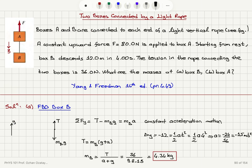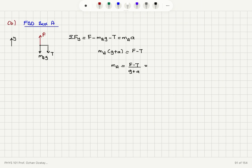And F was 80 newtons. That's the force applied to box A. So, this is 80 newtons minus 36 newtons, the tension in the rope, divided by 9.8 minus 1.5, and that gives us 5.30 kilograms for the mass of box A.